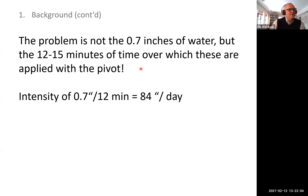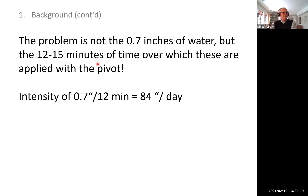The problem is not the seven-tenths of an inch itself — seven-tenths of an inch applied over a whole day is a million-dollar rain. But seven-tenths of an inch applied in 12 to 15 minutes causes a real problem because the intensity is then 84 inches per day, and that is more than a millennium rainstorm.